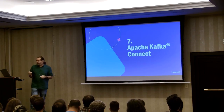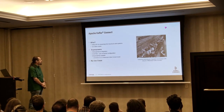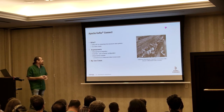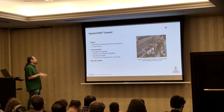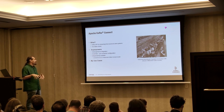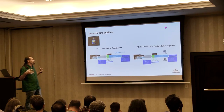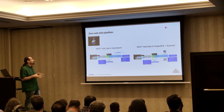Number seven: Apache Kafka Connect — the Kafka API for streaming from source to sink systems via a Kafka cluster. It gives you heterogeneous integration, it's code-free — you just configure the connectors and run them in the Kafka Connect cluster. The Kafka Connect cluster is independent from the Kafka cluster, so you can scale connectors independently. My use case: I built multiple data pipelines using a combination of technologies with Kafka Connect always in the middle.